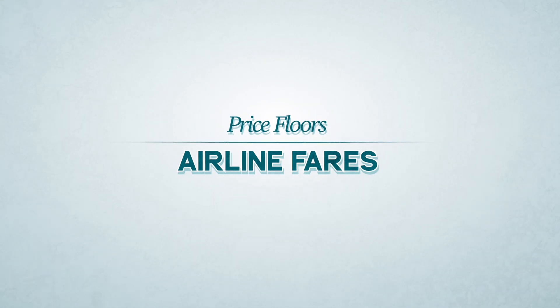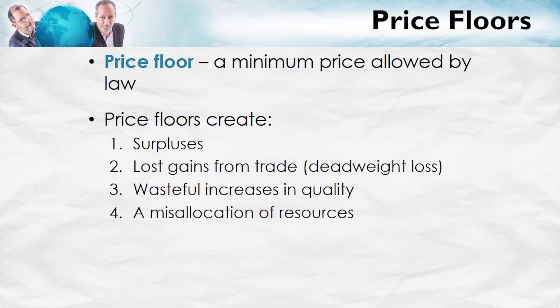In our final video on price floors, we'll look at the last two effects, and we'll take a close look at the example of airline regulation in the United States. We've shown using the minimum wage how price floors create surpluses and also lost gains from trade. We now want to look at wasteful increases in quality and a misallocation of resources, and for that we're going to turn to a different example: the regulation by the Civil Aeronautics Board of airline fares.